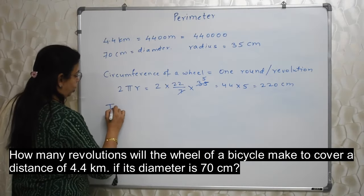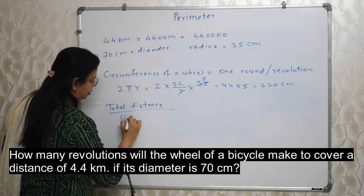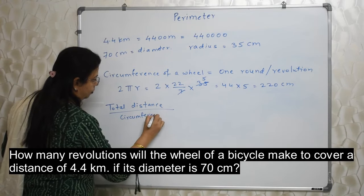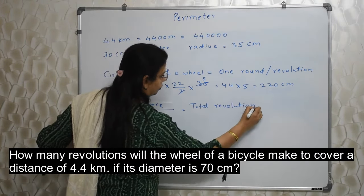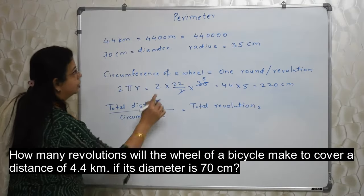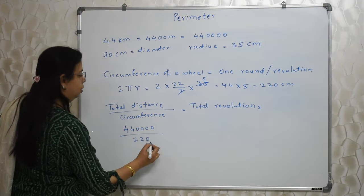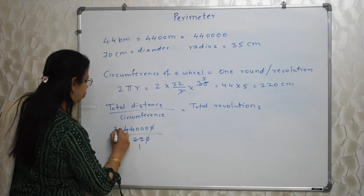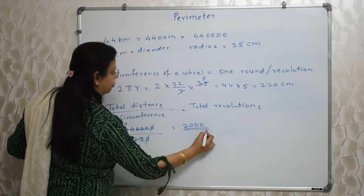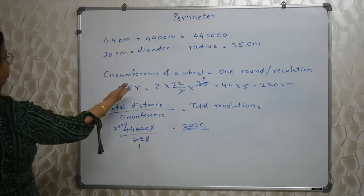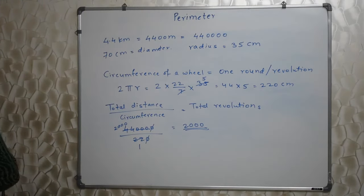Remember students: total distance upon circumference is equal to total revolutions. So total distance is 4,40,000 upon circumference 220. Dividing, total revolutions are 2000. So simple. One small formula of circumference and this very small formula. We have got 2 marks — so easy.